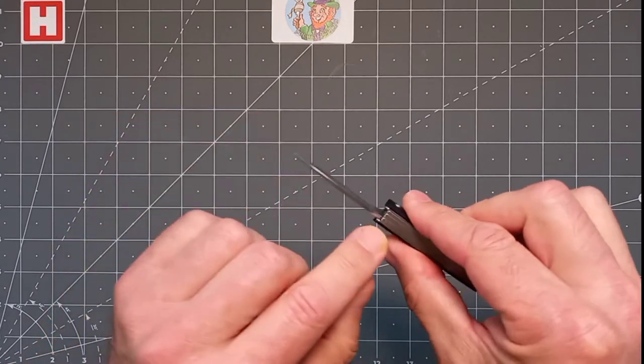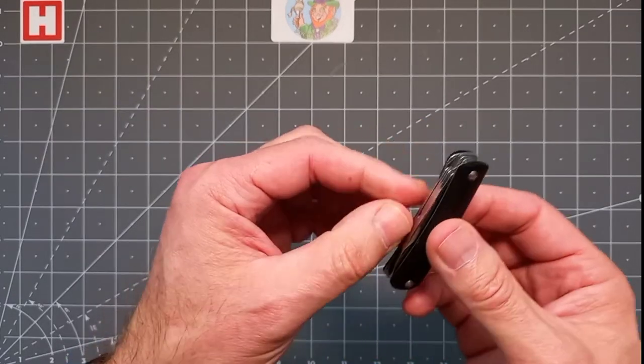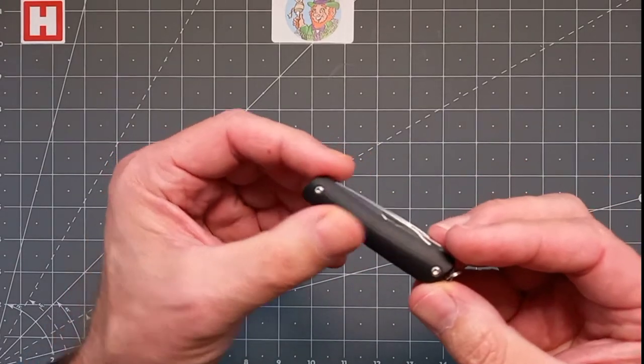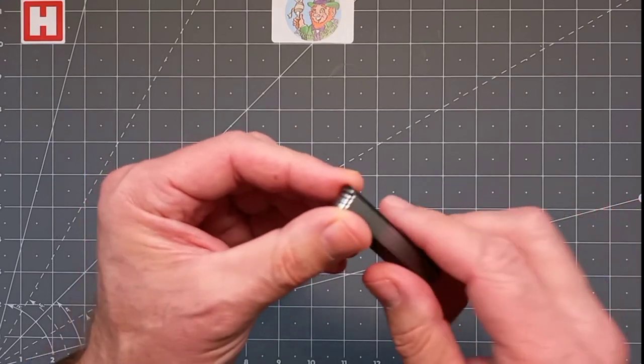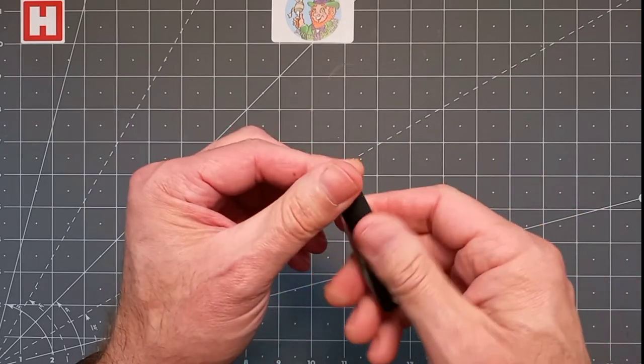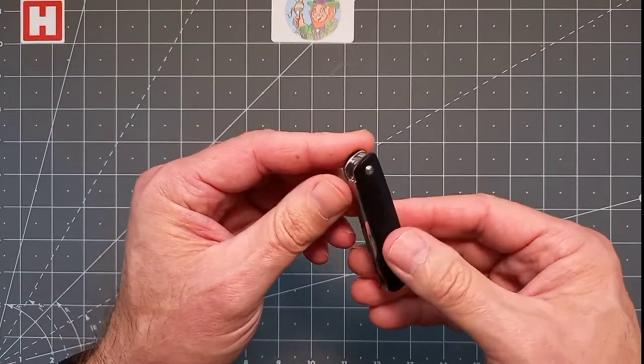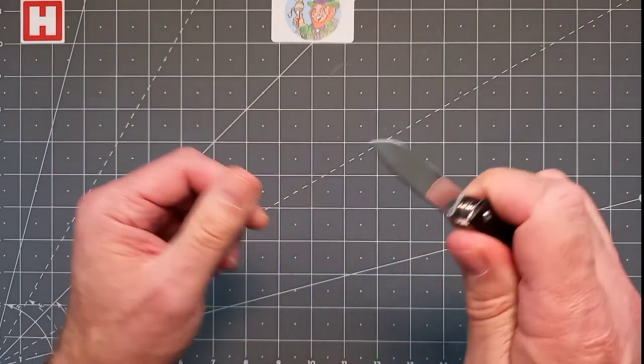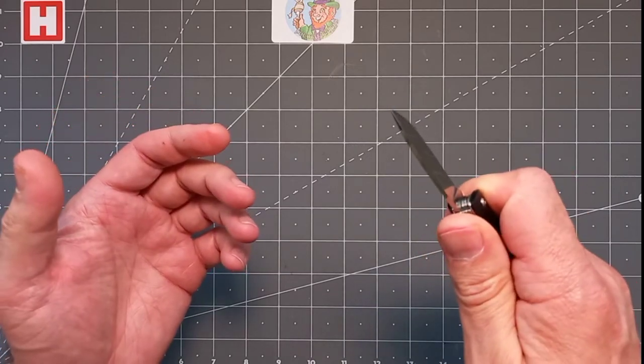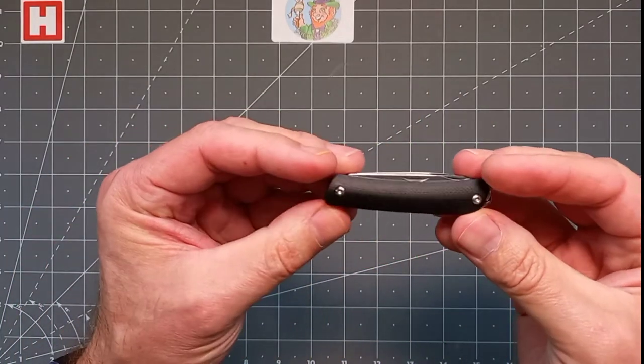You've got steel linings there. Look at the G10 scales though, really nice. Very fine checkering on there so she's very grippy but it's refined, not tacky looking. You could have this in an office, anywhere. I feel it is very grippy, definitely a sure hold. No pocket clip obviously because it's such a small knife.